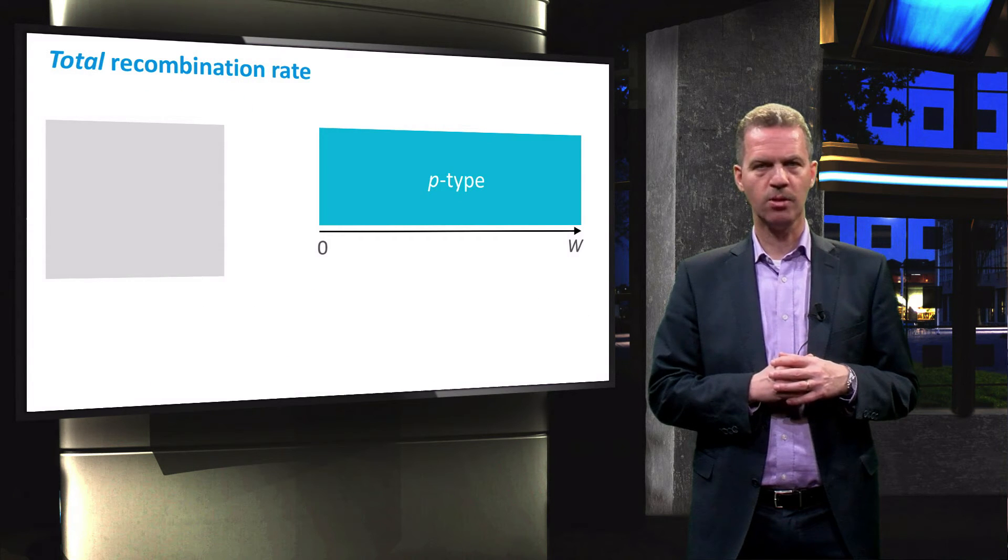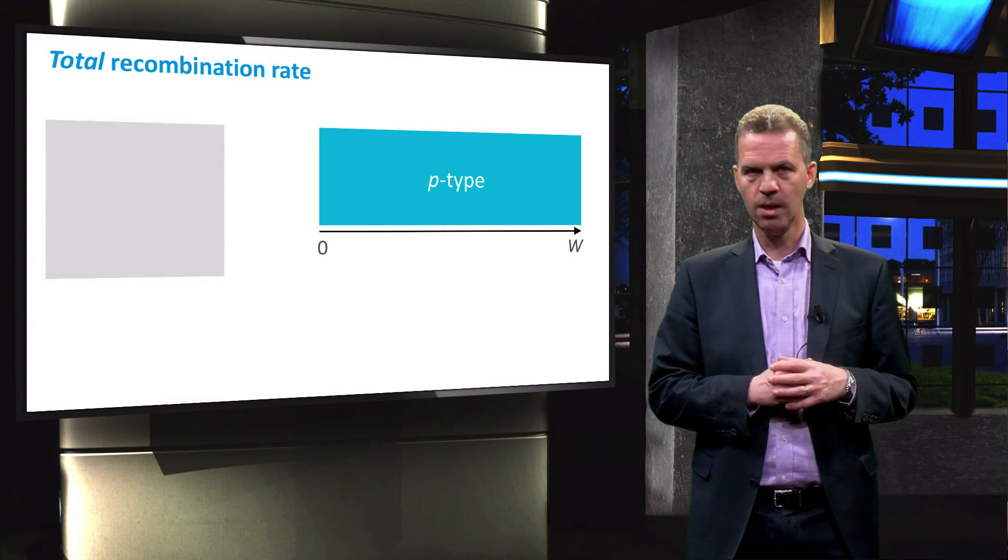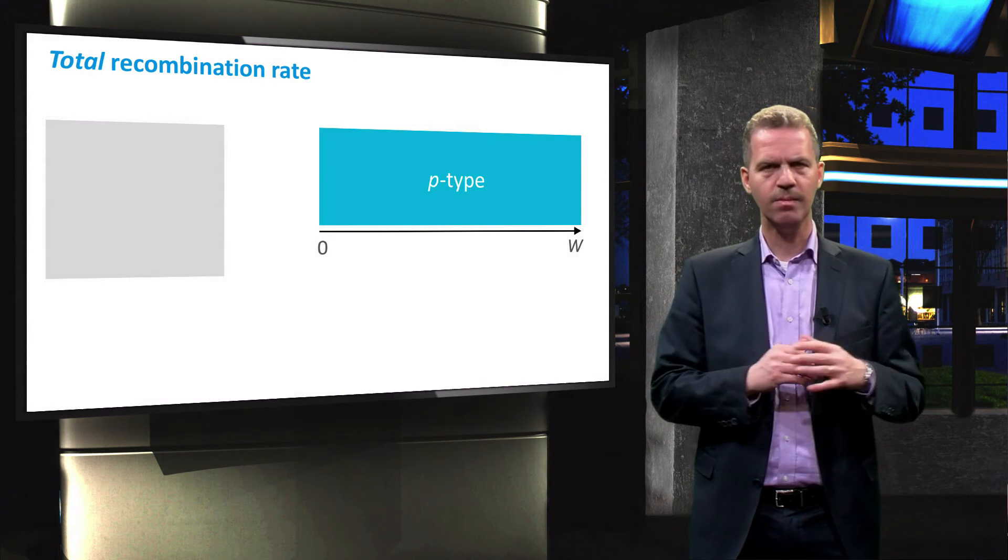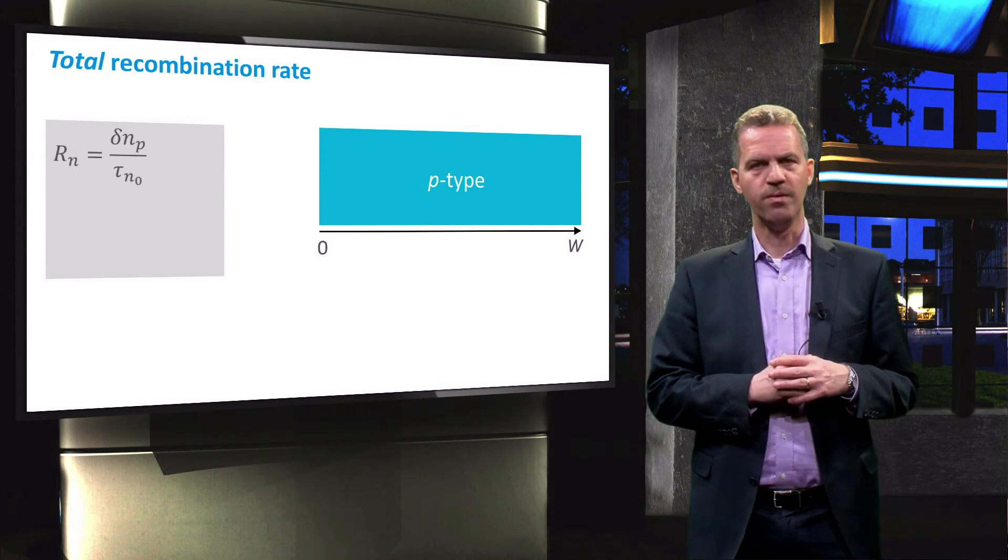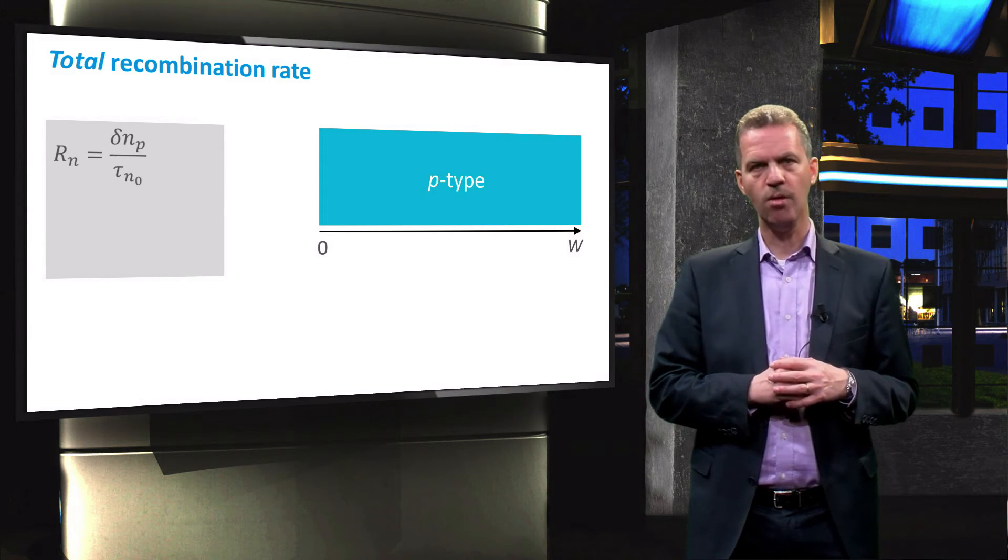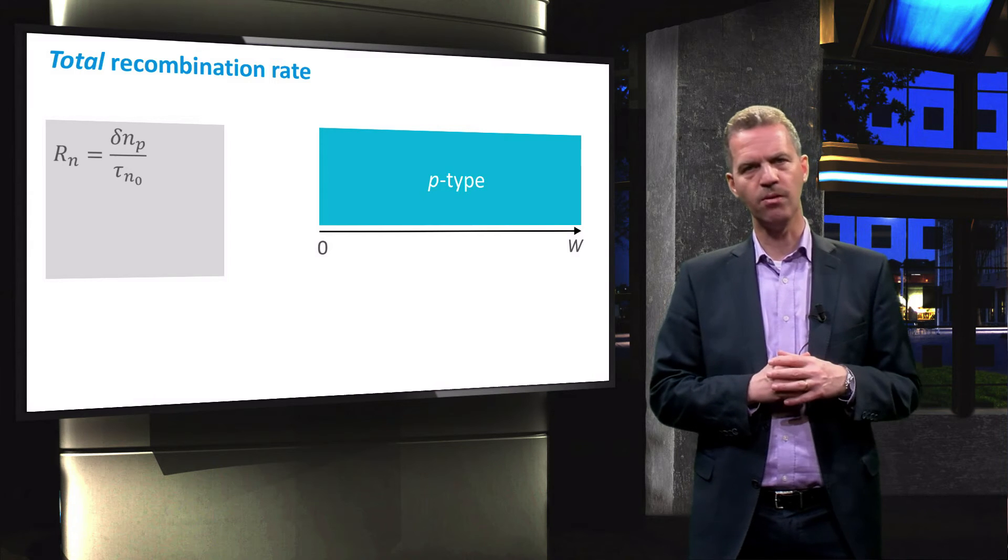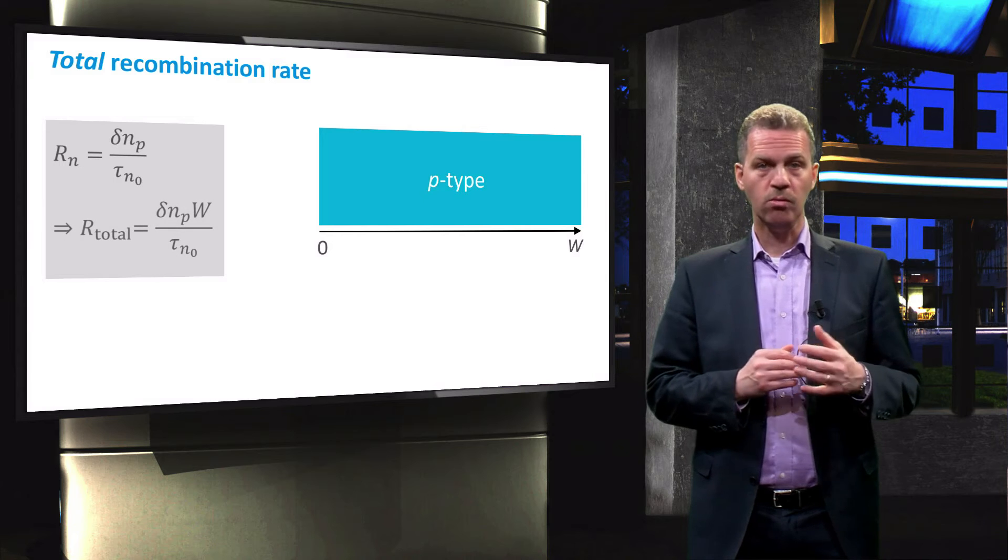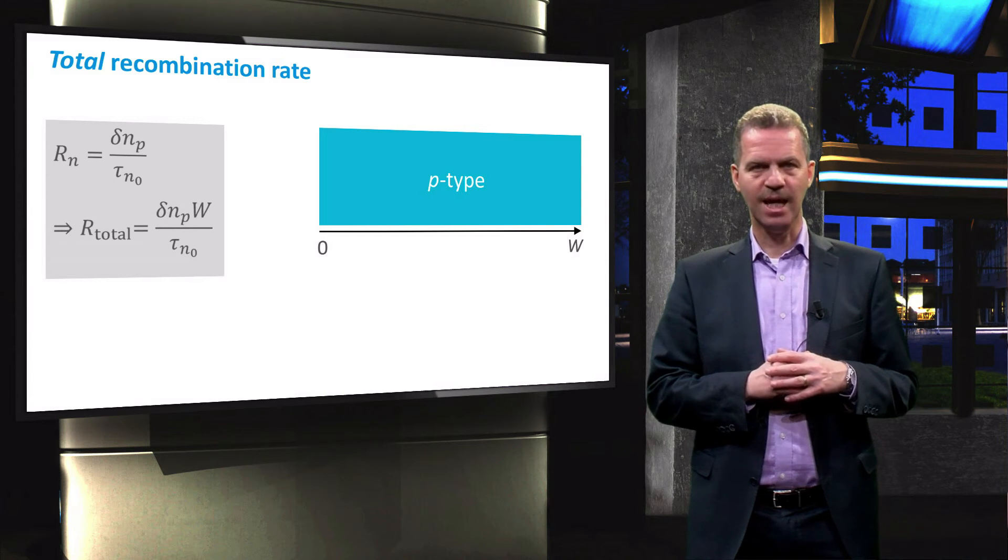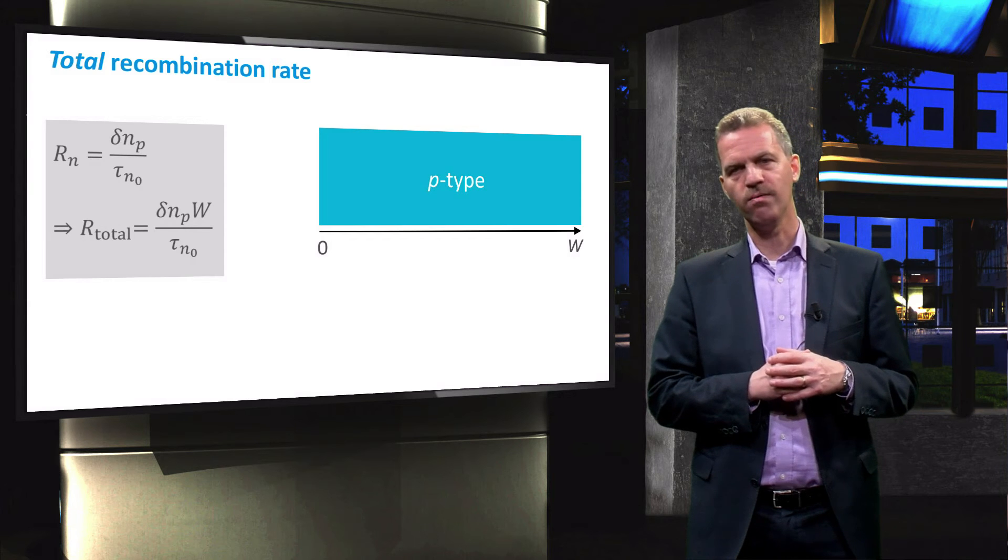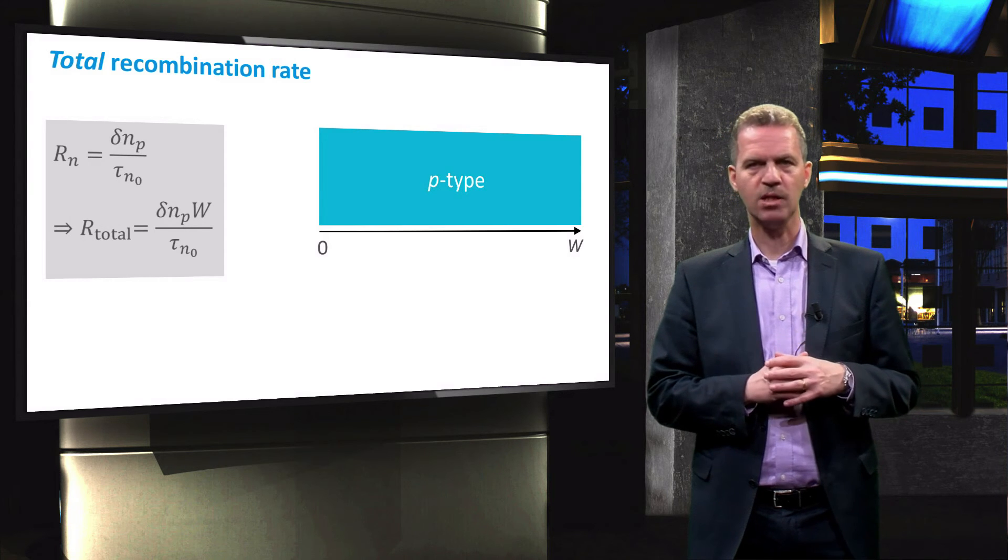We now consider a P-type semiconductor with thickness W and look at the total recombination throughout the material. We have seen before that the recombination rate Rn is determined by the excess minority carrier concentration and the lifetime. The total recombination rate is then obtained by integrating Rn over the thickness of the wafer and we find this expression.